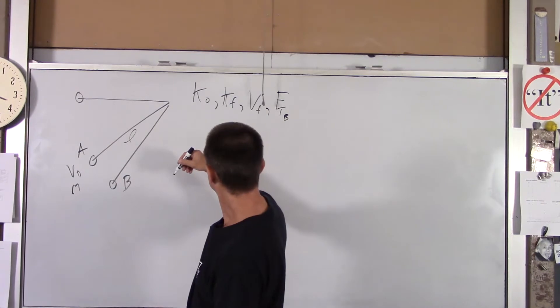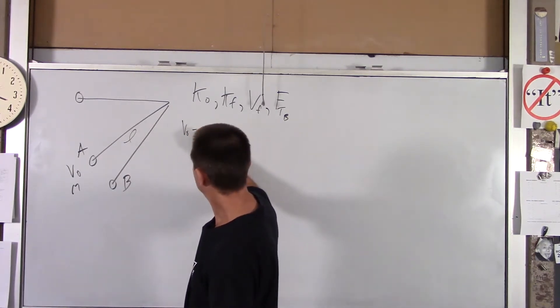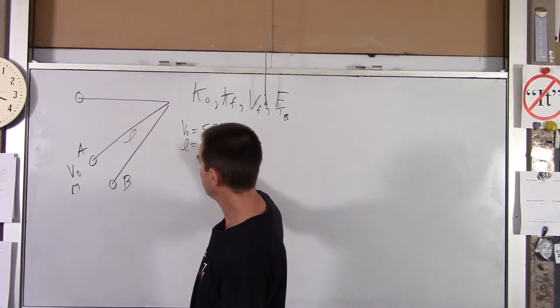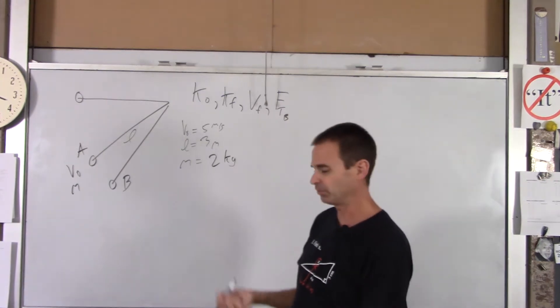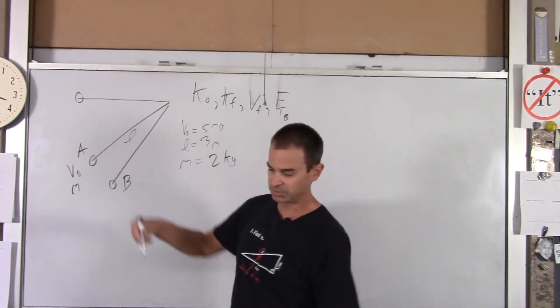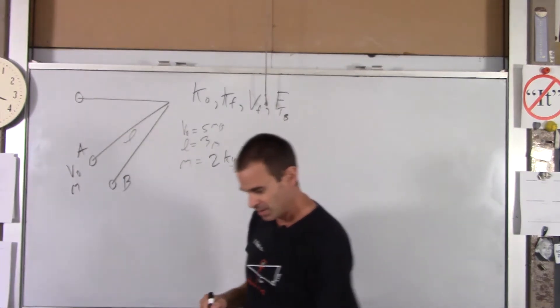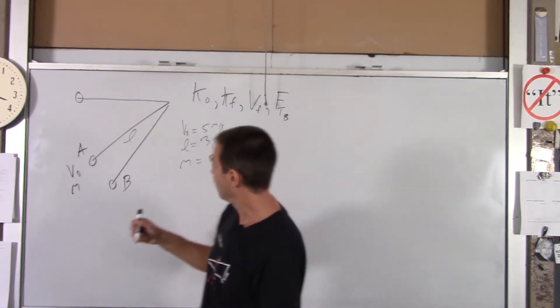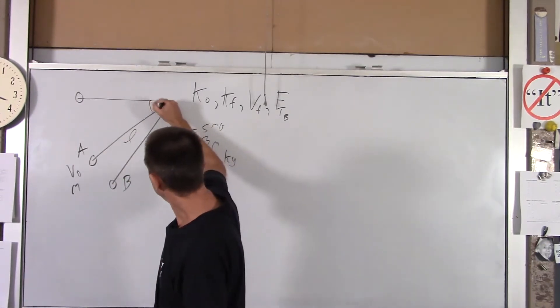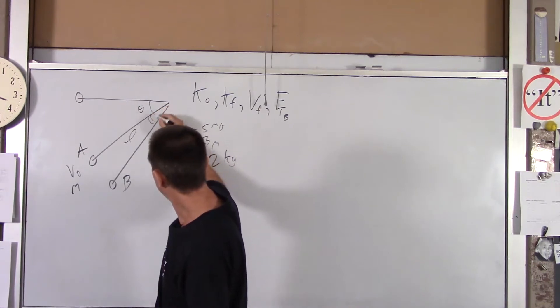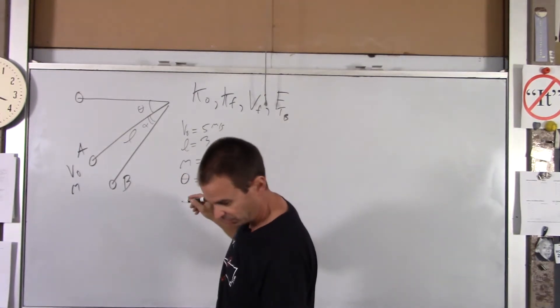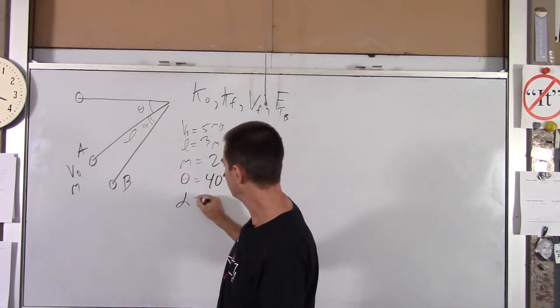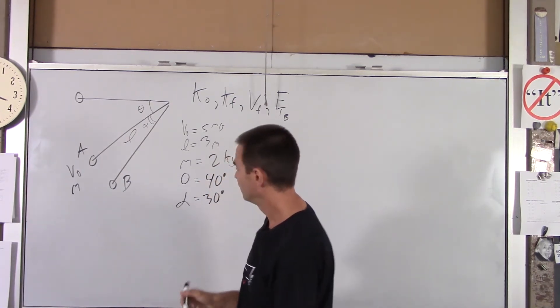We're going to find the initial kinetic energy. We're going to find the final kinetic energy, the final velocity at point B, and the force of tension in the string at point B. Now the numbers, I'll go ahead and throw those in here. Let me tell you V0 is 5 meters per second. L is 3 meters. And mass of the pendulum bob is 2 kilograms, which is about the same mass as your textbook. So it's your textbook swinging back and forth from a 3 meters is about 10 feet, 10 foot long string in the classroom here. This angle here, we'll call that theta. This angle is different, we'll call it alpha.